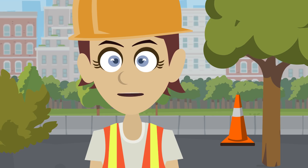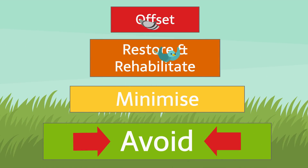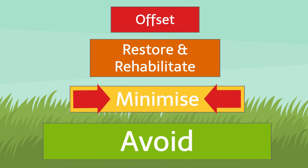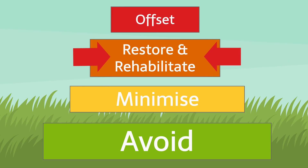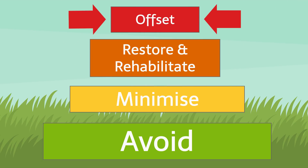The hierarchy prioritises how you might manage impacts to biodiversity in the following way: firstly, avoid any impacts in the first place; then minimise impacts to biodiversity as much as possible. If this is not possible, any damage to habitat should be restored or rehabilitated, and as a last resort, destroyed habitat should be offset through the creation of new habitat.